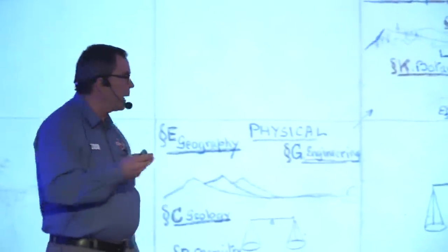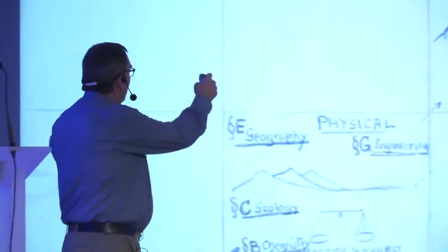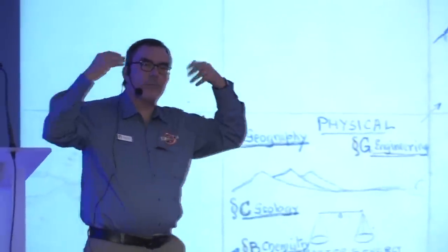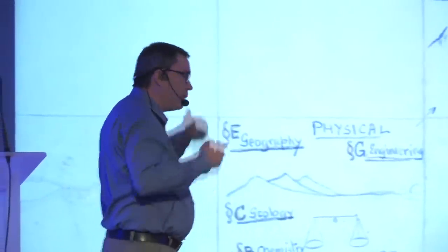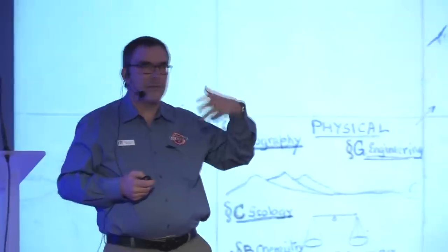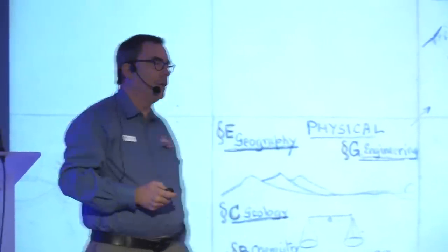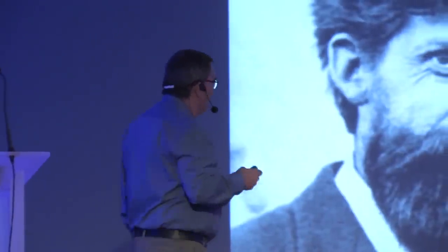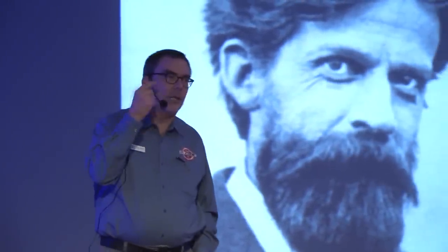Geddes was a very interesting man. He had these things he called thinking machines — he drew out these squares and set up relationships between things, and it helped him think about ideas. We would call these mind maps today, and he was doing this at the turn of the century. He was also a very mercurial man — apparently very hard to work with. He started lots of projects he never finished, because he would go off into the woods. But Geddes was this incredible man focused on helping us learn to see what we never recognized right below our feet.